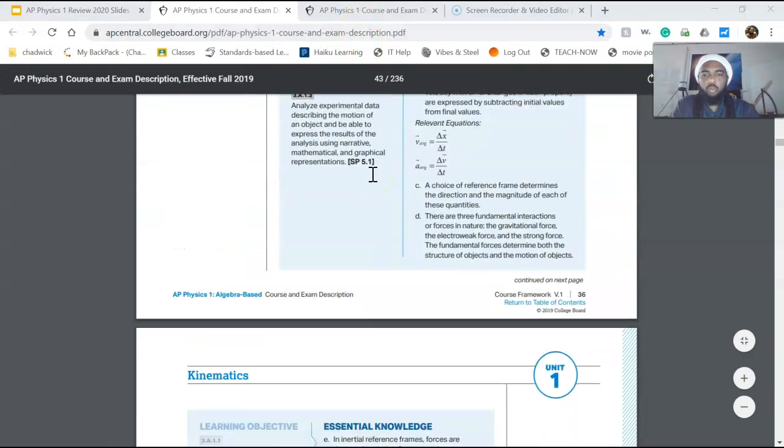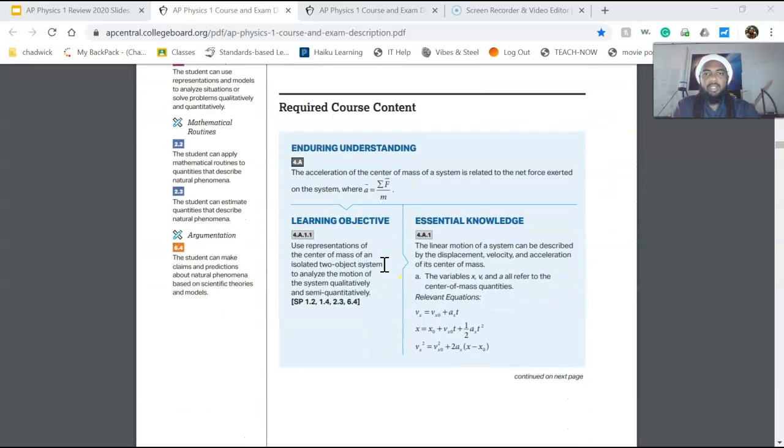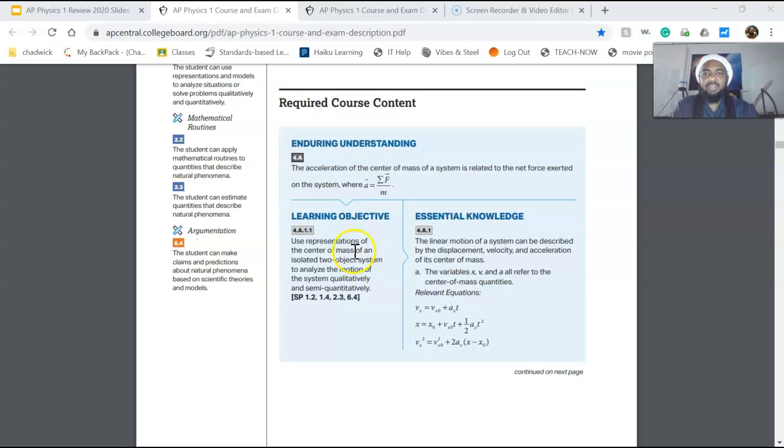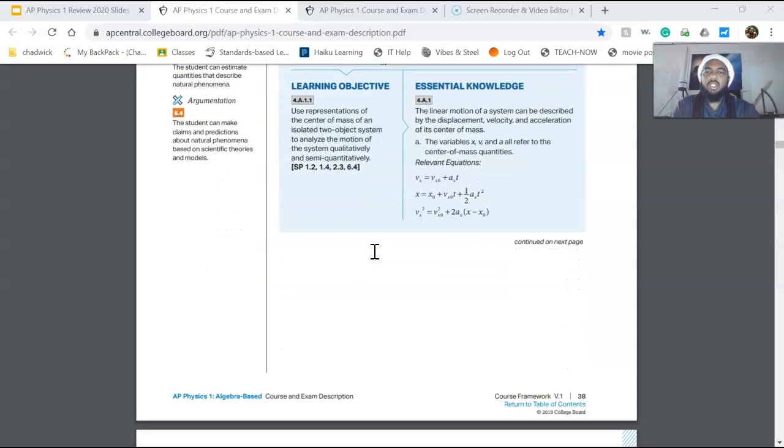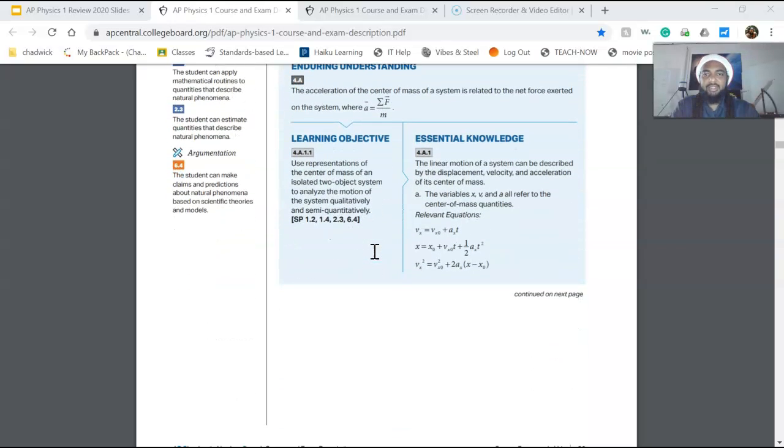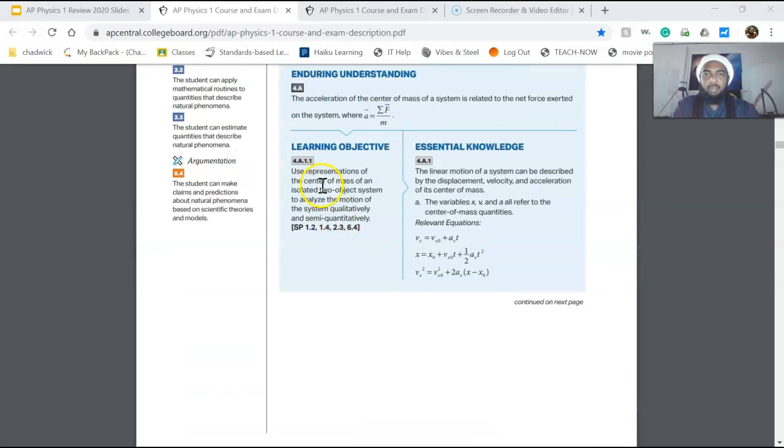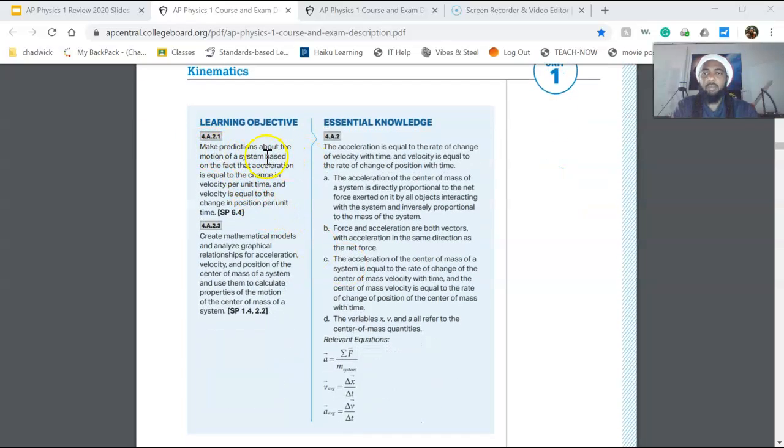Let's take a look at 1.2, representations of motion. The enduring understanding here is really just the definition of acceleration. But under 1.2, under the idea of representing motion, the learning objective is really about using representations to analyze the motion of a system qualitatively and semi-quantitatively. What else do we have? Make predictions about the motion of a system and then create mathematical models and analyze graphical relationships.